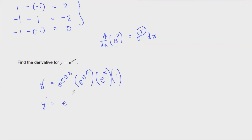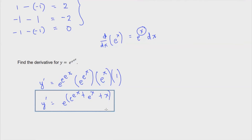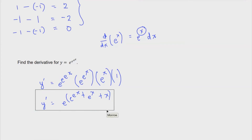This expression shows a lot of chain rules applying the exponential derivative. If we factor out the base of the exponent, that's simply e raised to e to the x plus e to the x plus x. This is kind of the simplest expression we can give here — we just added all the exponents because they have the same base. So this is the answer for this expression.